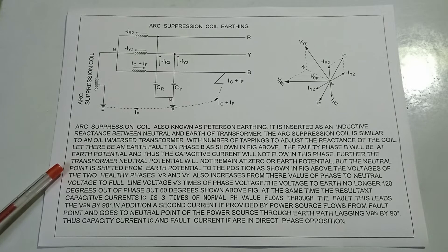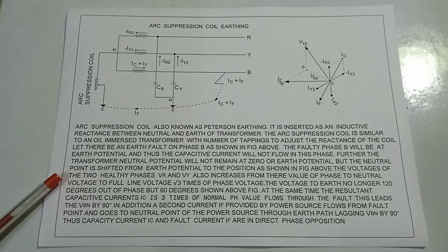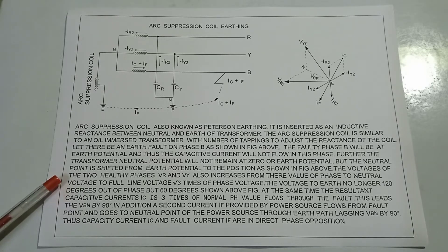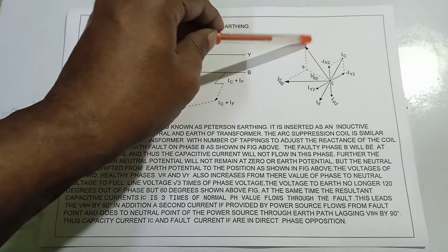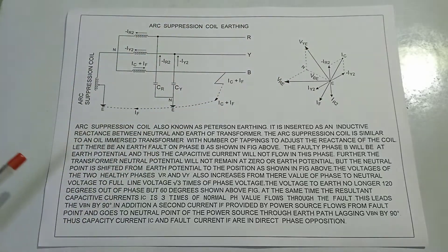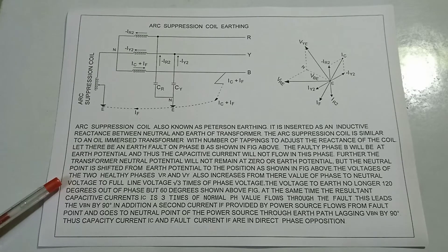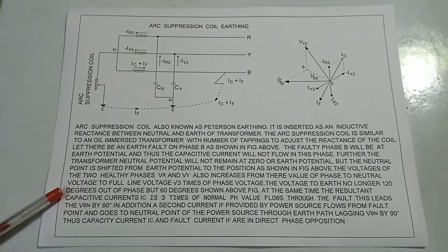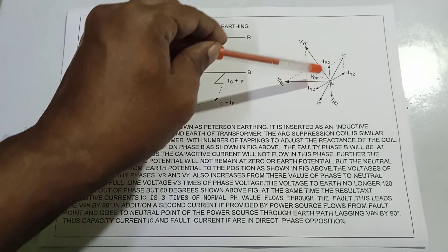The voltages of the two healthy phases Vr and Vy also increase from their phase-to-neutral voltages to full line voltages — root 3 times the phase voltages. The voltage to earth is no longer 120 degrees out of phase but 60 degrees, as shown in the figure above.